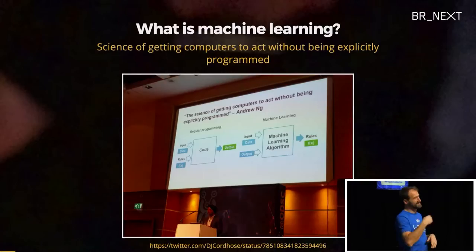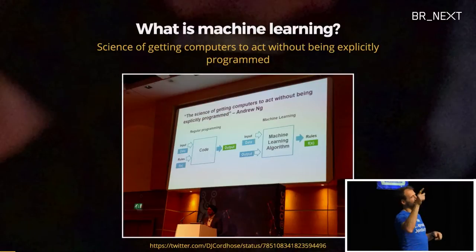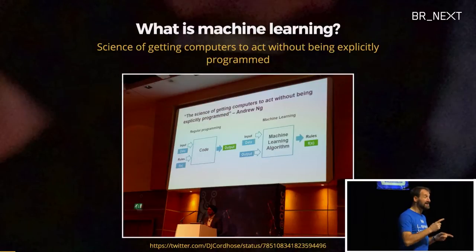This is a visual introduction, so I have lots of graphics and online demonstrations. First of all, what is machine learning? The main thing about machine learning is the science of getting computers to act without being explicitly programmed.